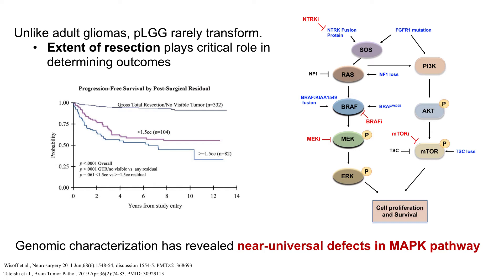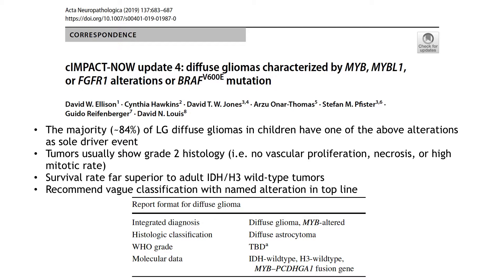Unlike adult low-grade gliomas, pediatric low-grade gliomas rarely transform, and tumors that receive gross total resection often behave very indolently with long-term survival. To address this conundrum, C-Impact Now issued another update on diffuse gliomas in the pediatric population, recommending a more vague diffuse glioma classification nomenclature that tacks on the specific alteration that is the driver event — for instance, an MYB fusion in a diffuse glioma-type histology. This is really to address the fact that these tumors are fairly unique and probably should be classified very differently from their adult counterparts.